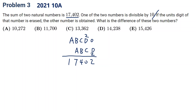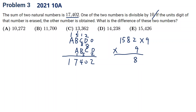So D is 2 and C is 8 plus 1. And B will be 5. And there's another carry of 1 from there. And A will be 1. So we are done. The smaller number is 1582. And the difference will be 1582 times 9. So let's do the multiplication. 14238 will be our answer.